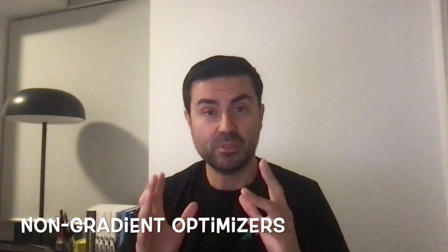For example, when you have a quantum neural network or a quantum circuit, it's not always easy to find a derivative. So what do you do? You use non-gradient optimizers. You use an optimizer to minimize the loss function or whatever objective function you have, but without using derivatives.